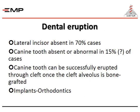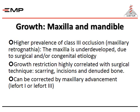The lateral incisor is absent in 70% of cases during dental eruption. The canine tooth is absent or abnormal in 15% of cases; the canine can be successfully erupted through the cleft once the cleft alveolus is bone grafted, along with implants and orthodontics. There is a higher prevalence of Class 3 malocclusion and maxillary retrognathia. The maxilla is underdeveloped due to surgical and/or congenital etiology; growth restriction is highly correlated with surgical technique, scarring, incisions, and denuded bone. This can be corrected by maxillary advancement — either Le Fort I or Le Fort III.